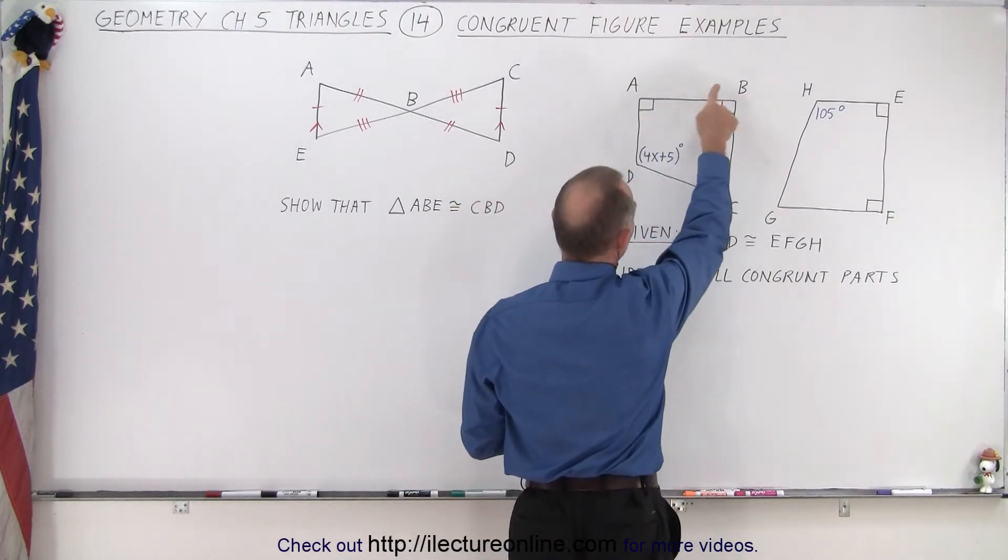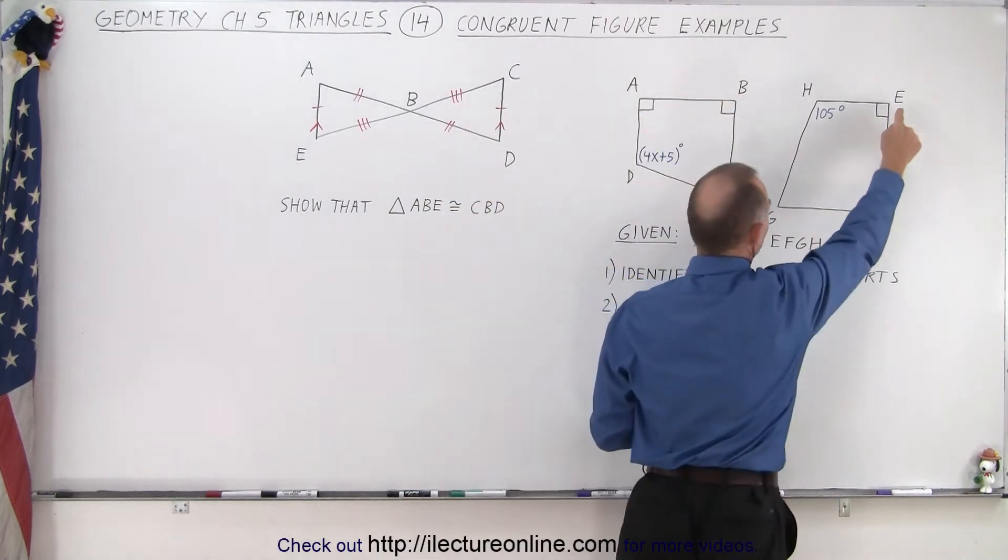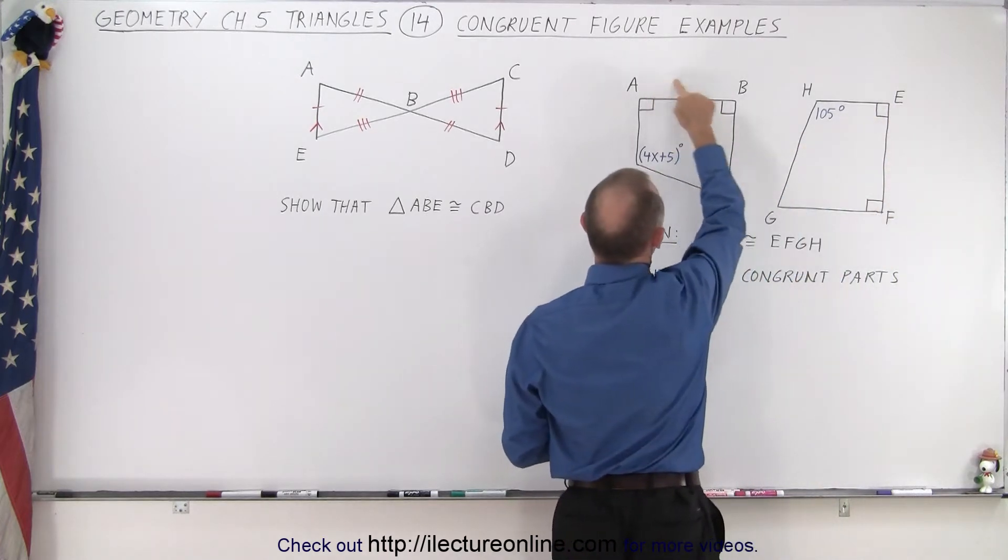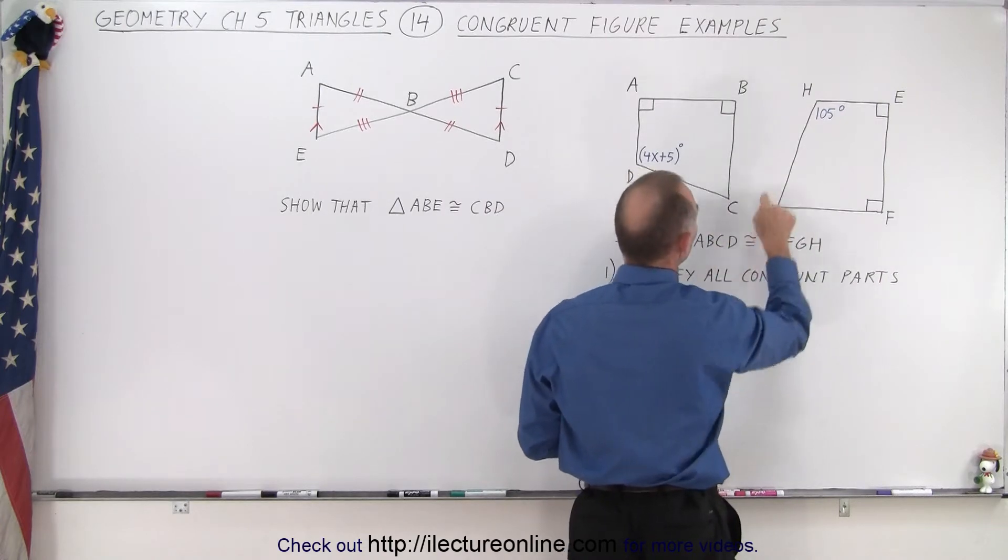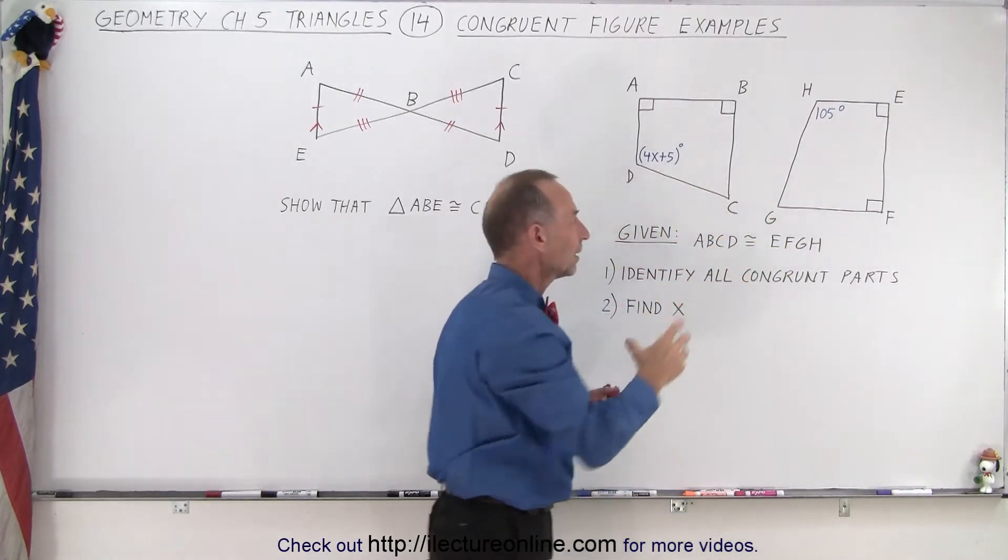Notice we start from this right angle here. We go to the other right angle here. Here we went from E to F, going from A to B. Then we went from B to C, F to G, from C to D, G to H.